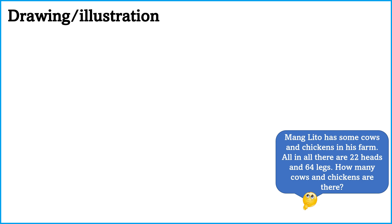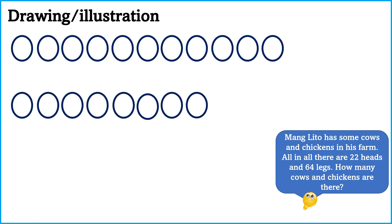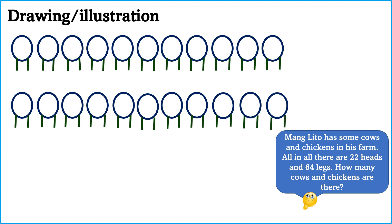There are 22 heads, so we're going to draw 22 heads. Then for each head, we're going to put 2 legs, since chickens and cows have a common of 2 legs. As you can see in our illustration, we put 2 legs in every head. So 22 heads times 2 legs is equal to 44 legs.